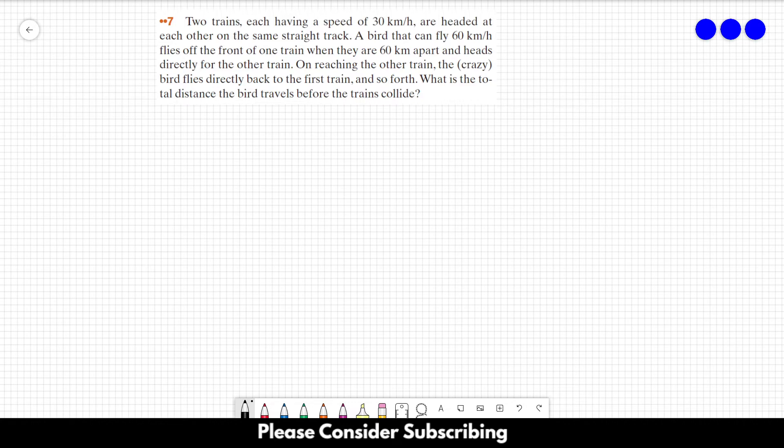the crazy bird flies directly back to the first train and so forth. So we have two trains, one train here and another train here, and we have a crazy bird that's going like this, going from the first to the second one, and then the second one to the first, and so on. What is the total distance that the bird travels before the trains collide?